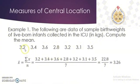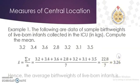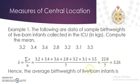We simply get the total of all these values and then divide by the total number of data. Since there are seven data points, the total of all these values is 32.8, divided by 7, which gives us 3.26. We could say that the average birth weight of live-born infants is 3.26 kilograms.